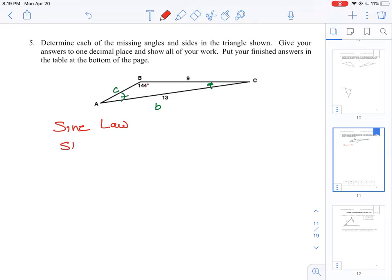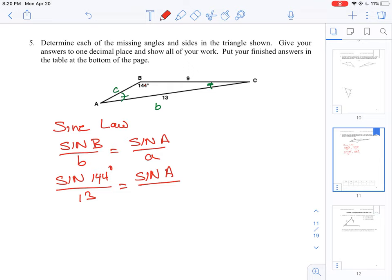So we could write down here sine B over little b. Remember, the big letter is the angle, the little letter is the side or the distance of the side, is equal to sine A all over little a. We know the first one: sine B is 144 degrees. We know the distance. We don't know what sine A is, that's going to be the angle we're ultimately going to find, but we do know the length opposite to that, which is 9.